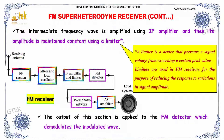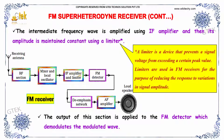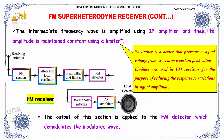The intermediate frequency is amplified using an IF amplifier, and its amplitude is maintained constant using a limiter. A limiter is a device that prevents the signal voltage from exceeding a certain peak value. Limiters are used in FM receivers to reduce the response to variations in signal amplitude. The output of this section is applied to the FM detector, which demodulates the modulated wave.